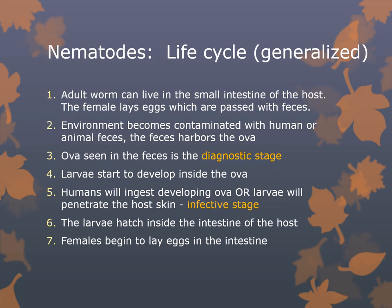Let's discuss the life cycle of nematodes. Always know the diagnostic stage, the infective stage, and the means of acquisition of the parasite for the exam. Be able to recognize ova and in some cases larvae. In the general life cycle, an adult worm lives in the small intestine of the host. The female lays eggs passed with feces, and the environment becomes contaminated with human or animal feces harboring the ova.